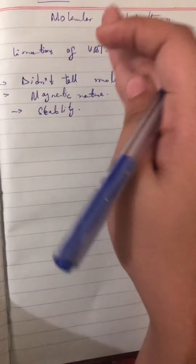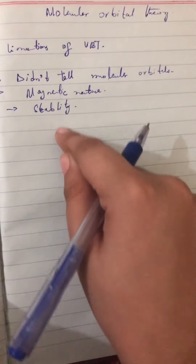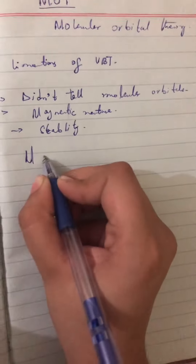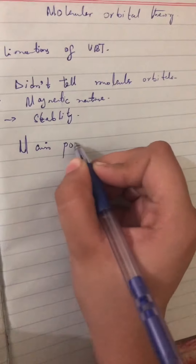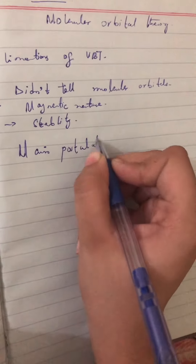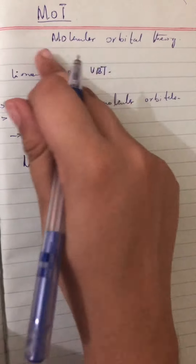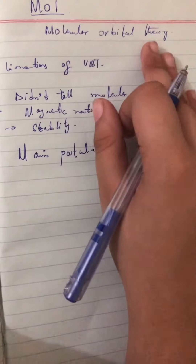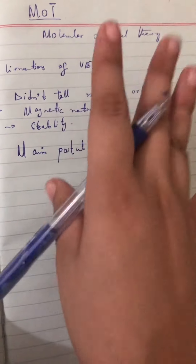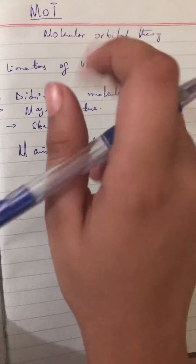So after VBT, we have MOT. All these things were described in MOT. First we will talk about the main postulates of MOT. As you can see from the name 'Molecular Orbital Theory,' it tells us about molecular orbitals, whereas before we studied atomic orbitals.